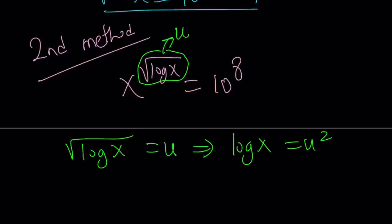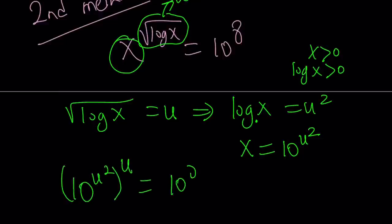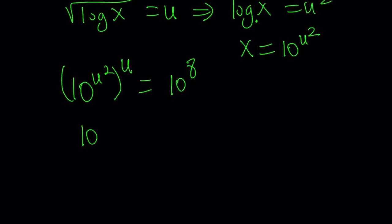Obviously, we have to be careful here. x needs to be positive and log x needs to be positive, which means x needs to be greater than 1. Great. Under those conditions, we're going to solve for x. Now, how do we solve for x? Well, you replace square root of log x with u. You got this. So what about x? By using the definition of logs again, x can be written as 10 to the power u squared. Now, let's go ahead and replace x with 10 to the power u squared and square root of log x with u and set it equal to 10 to the eighth power. And this gives us something real nice. 10 to the power u cubed equals 10 to the power eight, which implies u cubed equals eight, which implies u equals two.